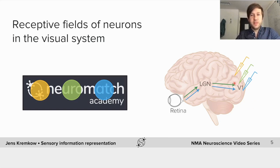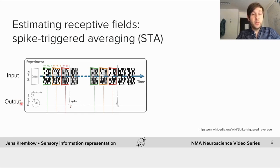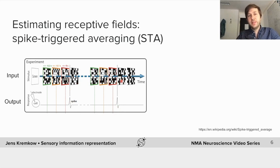How did we find out about receptive fields? We can use a relatively straightforward analysis method called spike-triggered averaging. As the name implies, it simply involves taking the visual stimulus — for example random checkerboard patterns — and averaging those in relation to the spike time. If we want to know what drives a neuron to spike, we simply average the stimuli that preceded each spike. For one spike we don't see much, but if we do that across multiple spikes, we can see on average what this neuron is selective for.